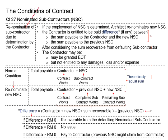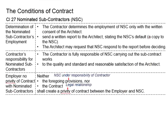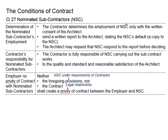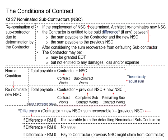We talk about the renominations of the subcontractor due to the determinations of the contractor. This is an extension from the clause related to the determinations of the nominated subcontractor. Now that the nominated subcontractor is proven in default, the nominated subcontractor shall be terminated from the project, and the architect will need to renominate a new nominated subcontractor for the remaining works.